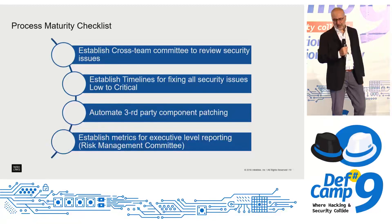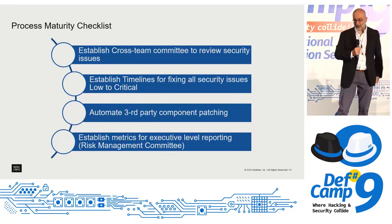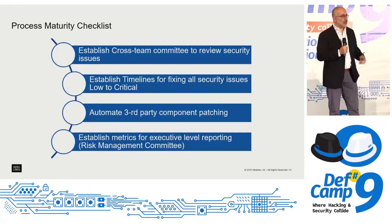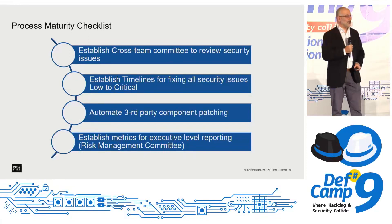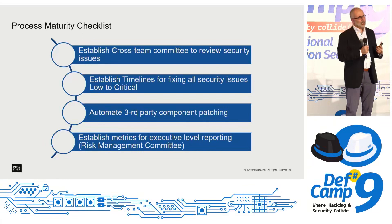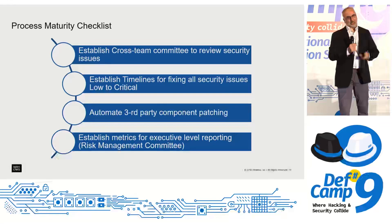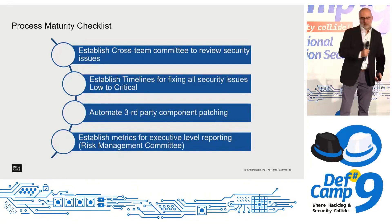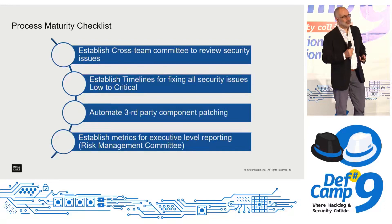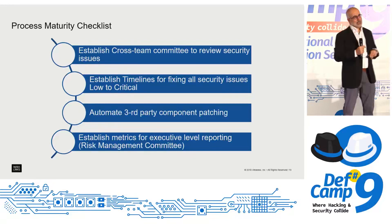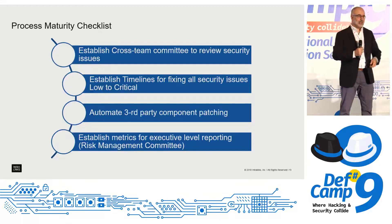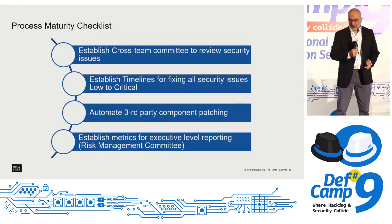Automated patching is very important — it's kind of self-explanatory. Establish metrics, measure what you're doing, and make sure you can communicate it to the people who invest money in your program. When you go back to ask for budget you have to show what you're doing. Determine what is important to your own business situation, communicate to executive management what the budget you need is, and show what you've already achieved — how many issues fixed, how fast you reacted.